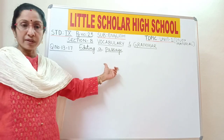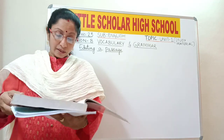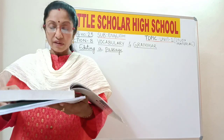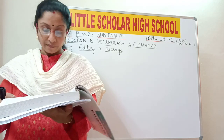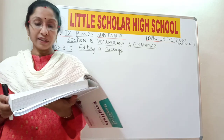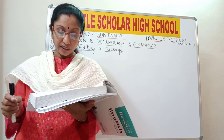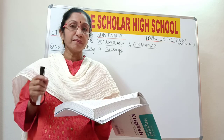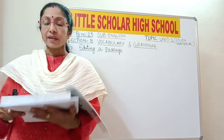Now what do you mean by editing a passage? Read the passage given below. There are 5 sentences in the passage numbered 13 to 17 at the beginning of each sentence. Each of these sentences has an error — a mistake. You have to correct and rewrite them in the answer booklet.